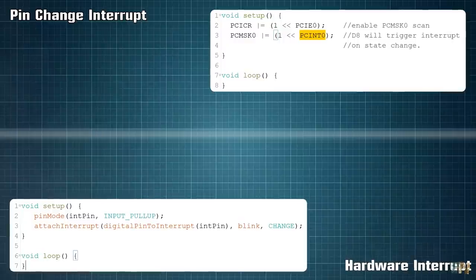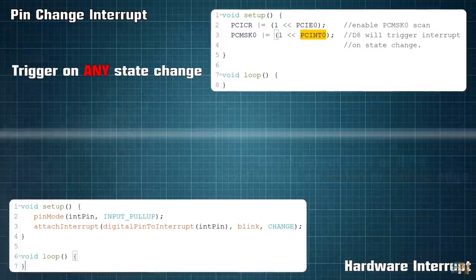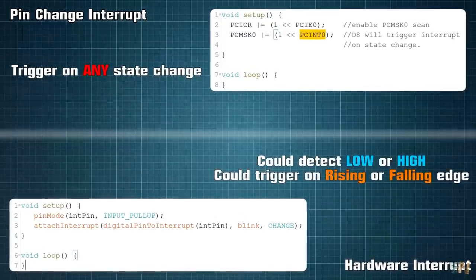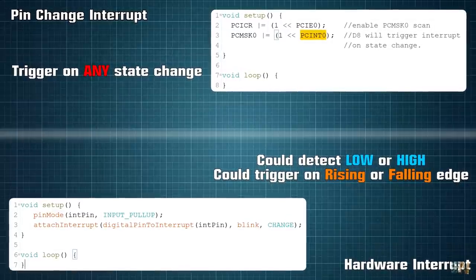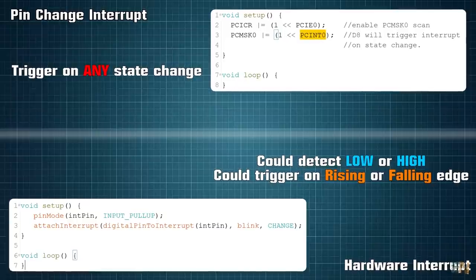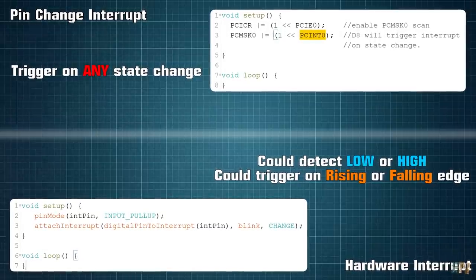So another difference between PCINT and the hardware interruption is that we can't set the PCINT to be detected on low or high or on rising or falling edge, as we do with hardware interruptions. It will only trigger when a pin changes its value and it doesn't matter if it is from high to low or from low to high.